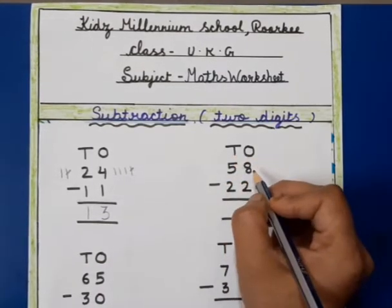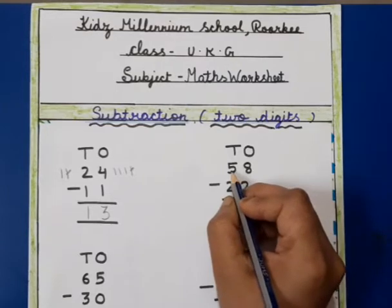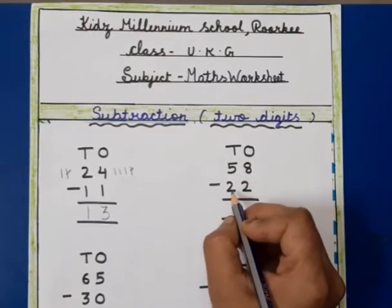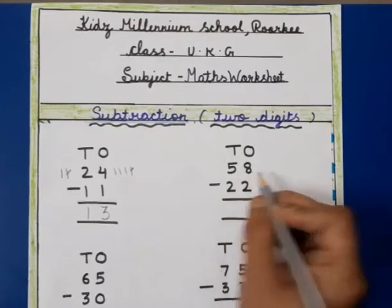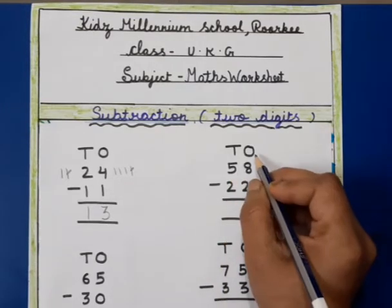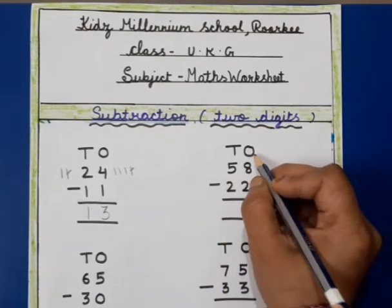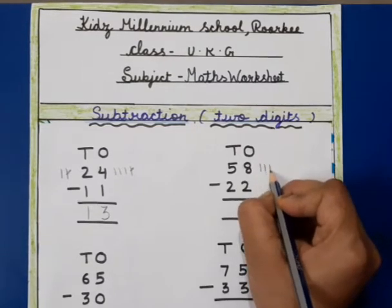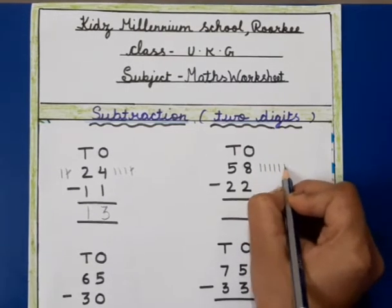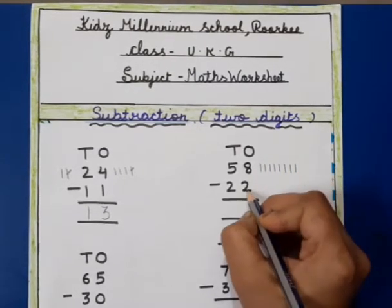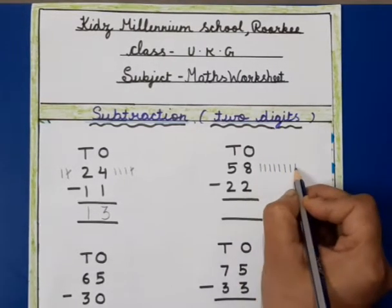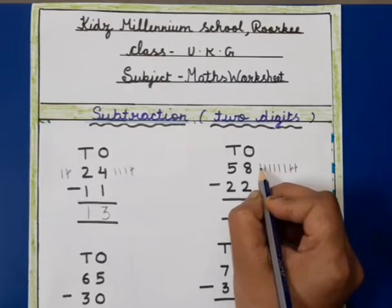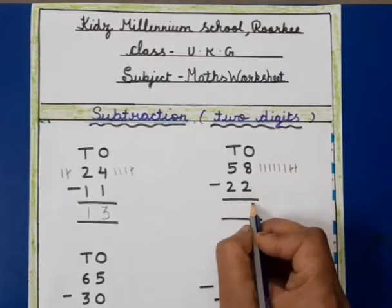Now next question. This is ones and this is tens. This is 58 and this is 22. We will subtract 22 from 58. First of all we will solve ones. This is 8 and we will draw eight lines. We will cut two, and we will get six. We will write 6 here.